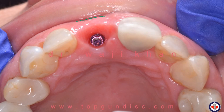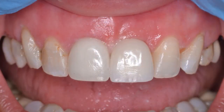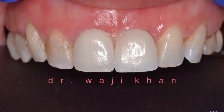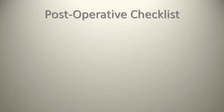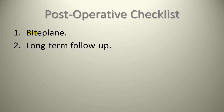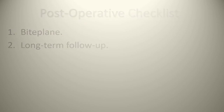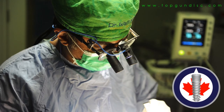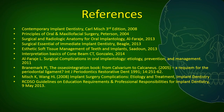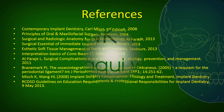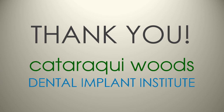After wearing the first crown, you can see the beautiful soft tissue bed it created. With the second crown in place, this is a beautiful result and the patient was very happy. Post-op checklist: ensure the patient has a bite plate and that there is provision for long-term follow-up. On behalf of the entire dental team at the Cataraqui Woods Dental Implant Institute and the Top Gun Dental Implant Study Club, thank you for listening.